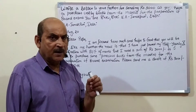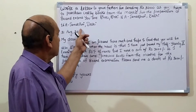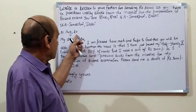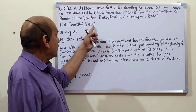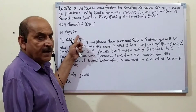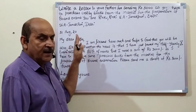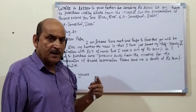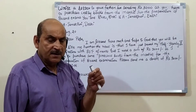In an informal letter, the sender's address comes first, followed by the date. For a formal letter, the date includes the full day, month, and year. In a formal letter, after the date, the recipient's address is also written down.